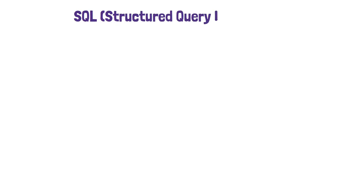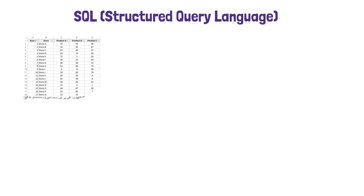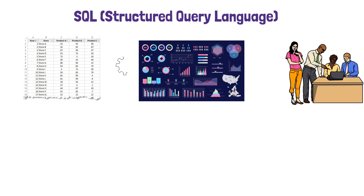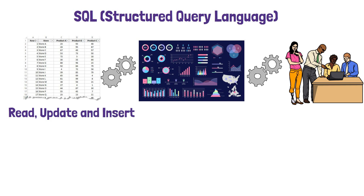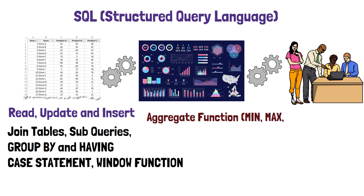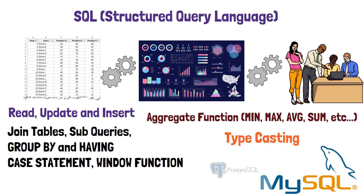Number four is learning SQL, or Structured Query Language. You will learn SQL while learning database fundamentals, so steps three and four are connected. As a data engineer you will be dealing with lots of data, and SQL is how you communicate with databases. Using SQL you can pull required data by applying business logic and visualize it so business people can track performance. Key SQL topics include reading, updating, and inserting data; joining tables; subqueries; GROUP BY and HAVING clauses; CASE statements; window functions; aggregation functions like COUNT, SUM, MAX, and AVG; and casting values. You can start with MySQL or PostgreSQL — both are open source with many similarities.